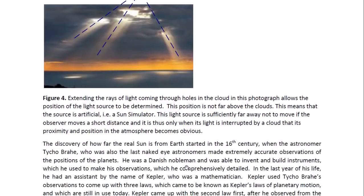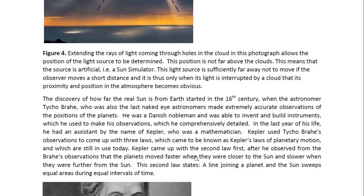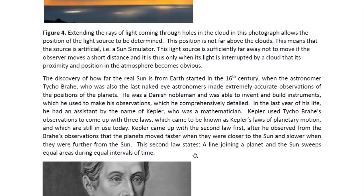Now, the discovery of how far the real sun is from Earth started in the 16th century when the astronomer Tycho Brahe, who was also the last naked eye astronomer, made extremely accurate observations of the positions of the planets. He was a Danish nobleman and was able to invent and build instruments which he used to make his observations, which he also comprehensively detailed. In the last year of his life, he had an assistant by the name of Kepler, who was a mathematician. Kepler used Tycho Brahe's observations to come up with three laws, which came to be known as Kepler's laws of planetary motion, and which are still in use today.